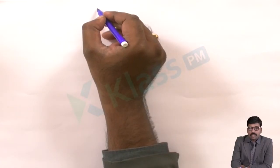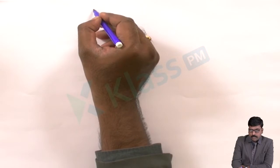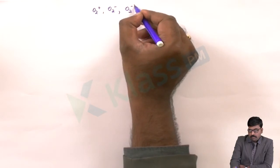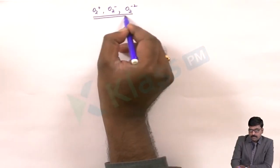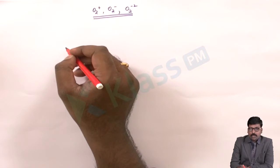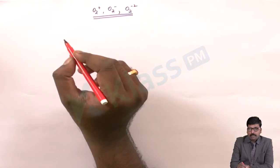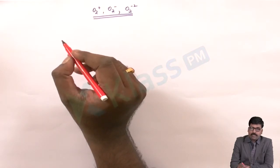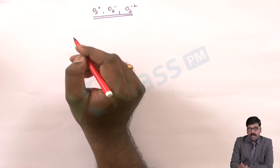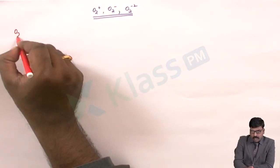Next, we will see the electronic configuration, bond order, and magnetic property of the oxygen-related ions: O2 plus, O2 minus, and O2 minus 2. For oxygen, unlike nitrogen, sigma 2pz has lesser energy while pi 2px and pi 2py have the same energy and sit higher. We will start the electronic configuration with that ordering.